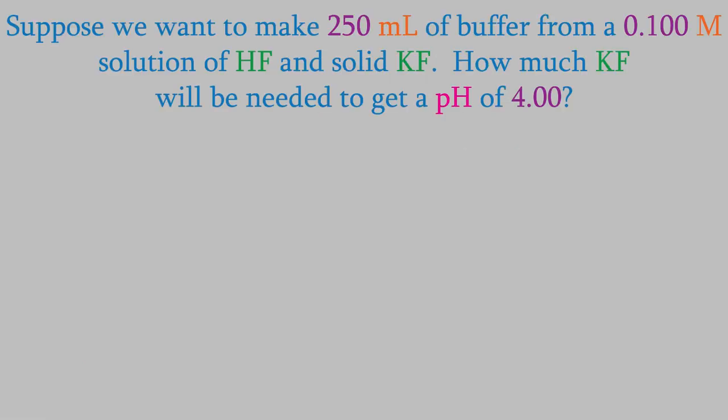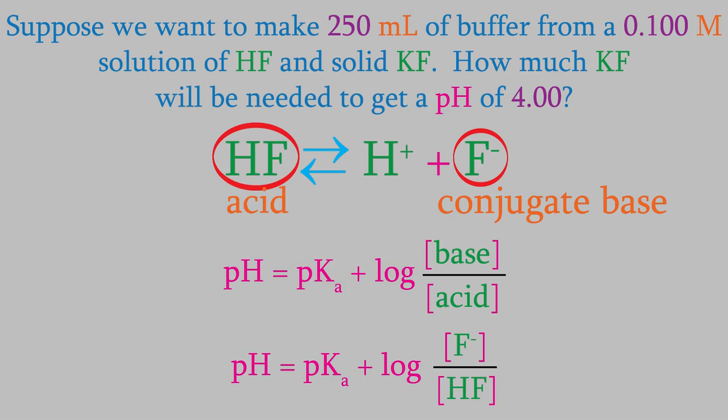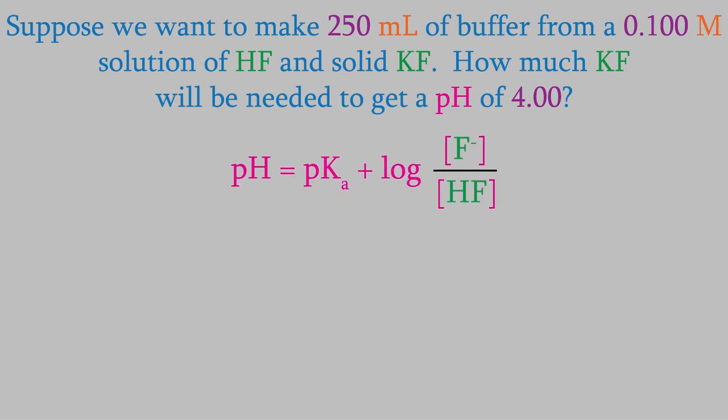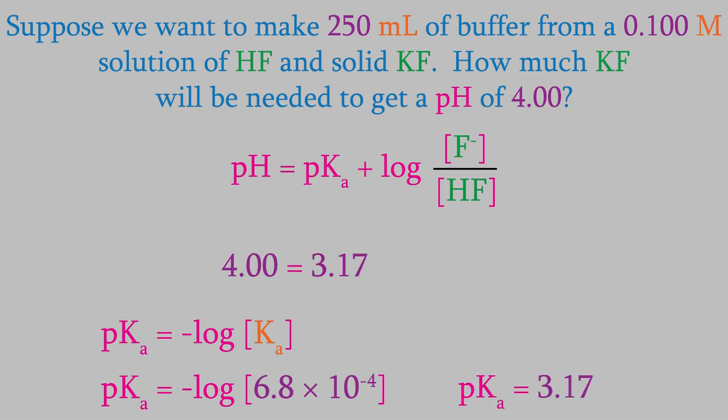For example, suppose we wanted to make 250 milliliters of a buffer from 0.100 molar hydrofluoric acid and solid potassium fluoride. If we want the pH of the buffer to be 4.00, how much potassium fluoride should we add? To find out, we'll use the Henderson-Hasselbalch equation. If you look at the chemical reaction, you can see that HF is the acid, and the fluoride ion is the conjugate base. And that's what we're trying to figure out. So, we'll just plug in our data into the equation. The pH is 4.00. To get the pKa, we need to take the negative log of the Ka, which we get from appendix D. It turns out the Ka is 6.8 times 10 to the minus 4. So, that means the pKa is 3.17.